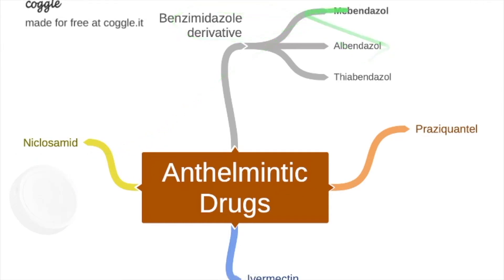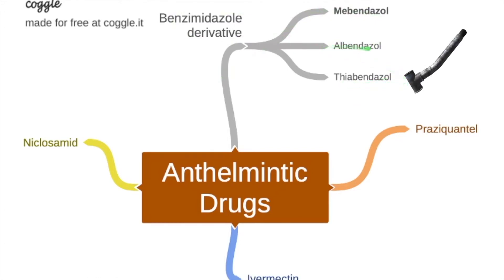The next group: mebendazole, albendazole, tiabendazole. It sounds like a bent pipe — bendazole. Remember this: bendazole, albendazole, mebendazole.